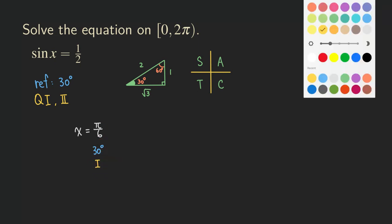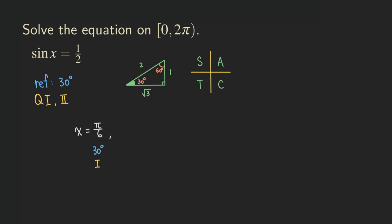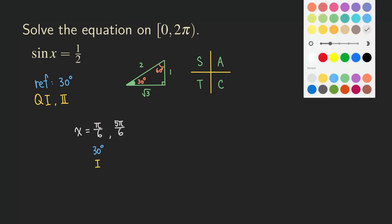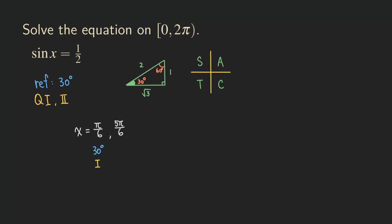The other solution is in the second quadrant: 150 degrees. We get 150 by taking 180 minus the reference angle of 30. In radians, 150 degrees is 5π/6. So the two solutions to this equation are x = π/6 and x = 5π/6.